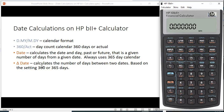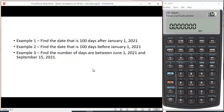And then finally, there's delta date, or this triangle date, which is below the MU key. So the shift, the red shift, and the MU key calculates the number of days between two dates based on the setting, whether you use 360 or a 365-day year. So let's take a look at a couple of examples here.